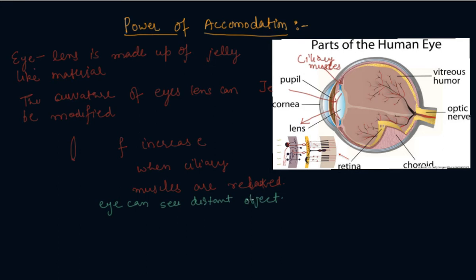And when you are looking at an object at a smaller distance, the ciliary muscles contract and the curvature becomes—the eye lens becomes thicker. So F decreases, and then you are seeing the near object.